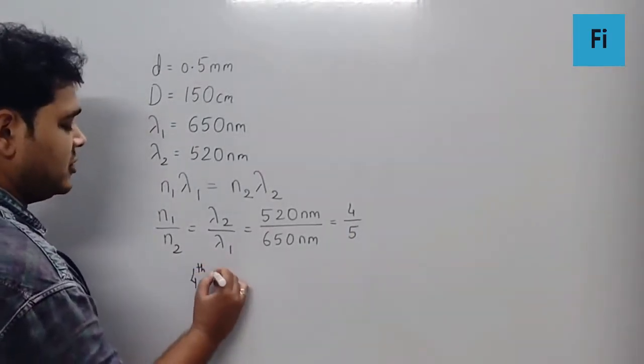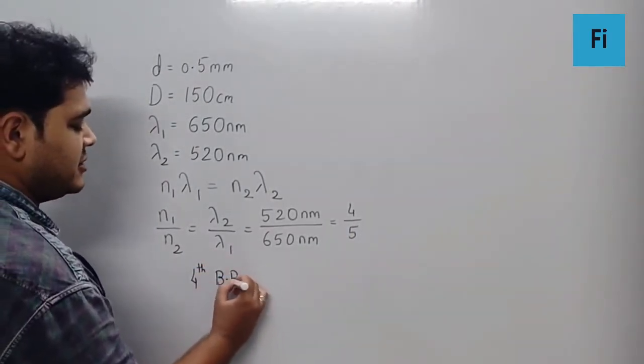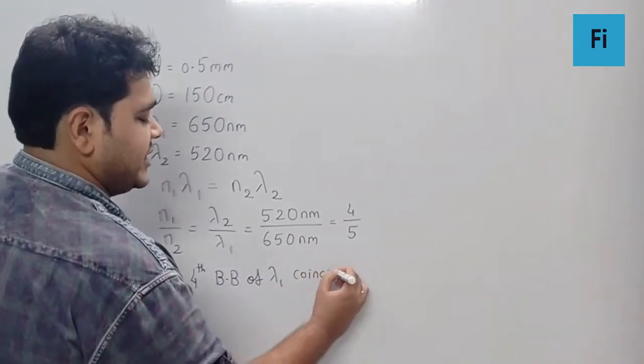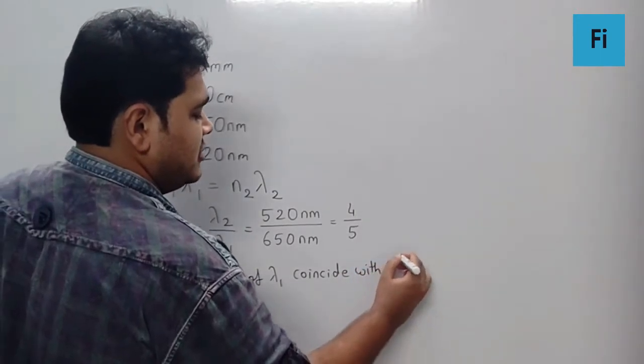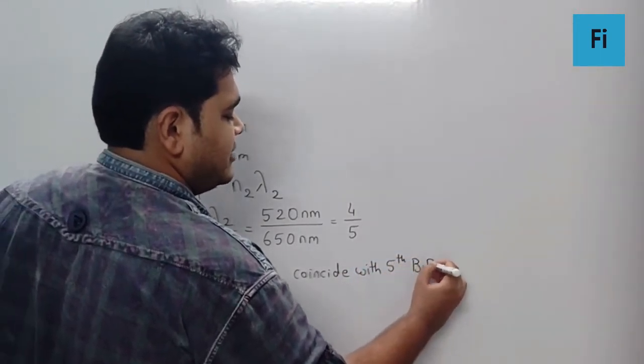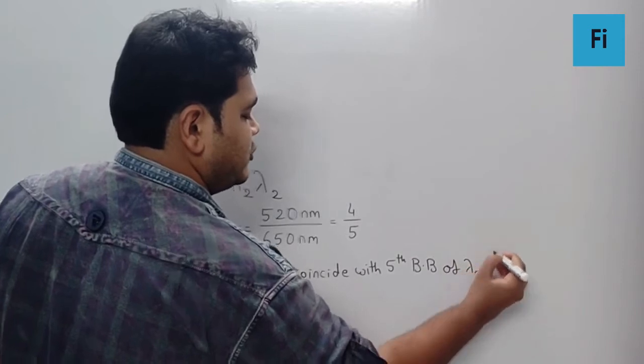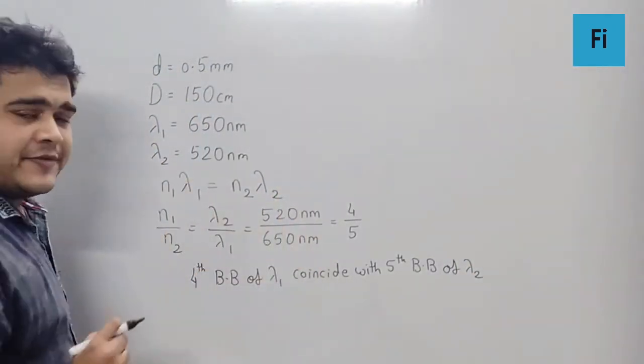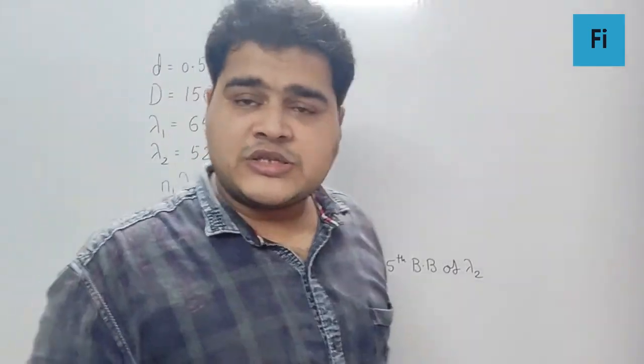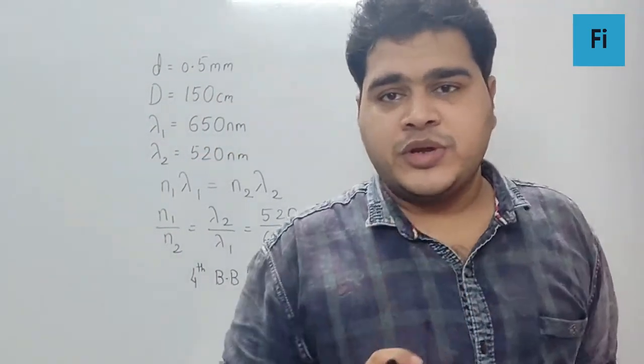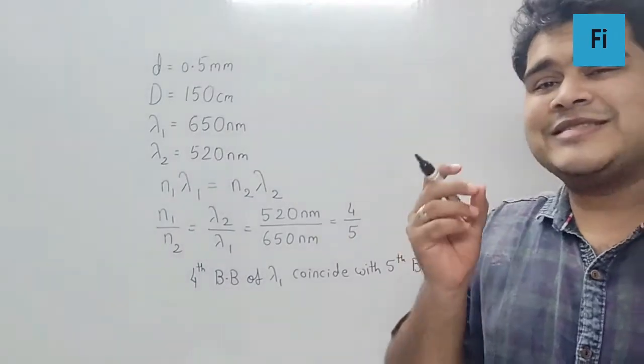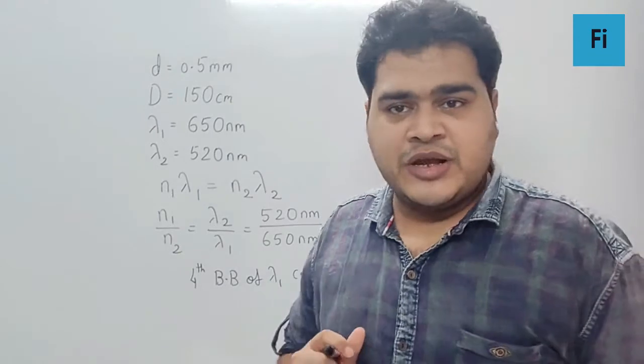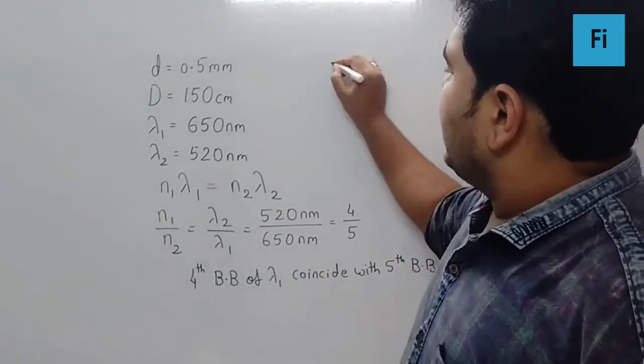And that means the 4th bright band of lambda 1 coincide with 5th bright band of lambda 2. Because we can take n1 to be 4 and n2 to be 5. Now, they have not asked which band is coinciding with which one. They have asked us the distance at which these bands are coinciding, which means the minimum distance we want to find.